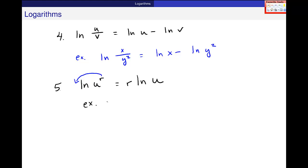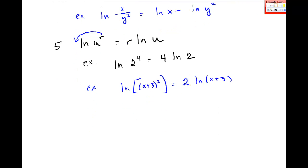So example, natural log of 2 to the fourth power is 4 times the natural log of 2. Or, another example, natural log of (x plus 3) squared is 2 natural log of (x plus 3).